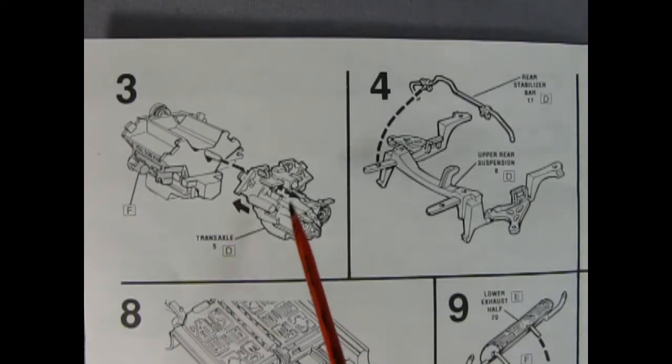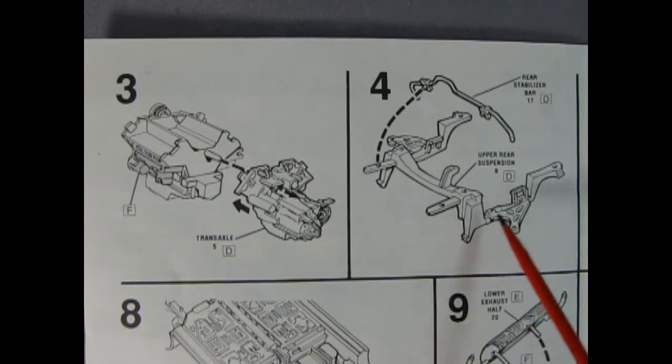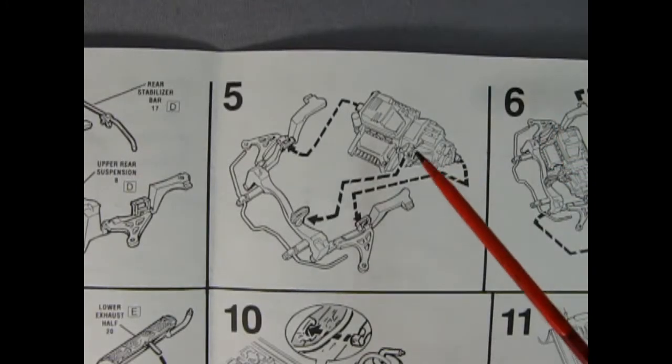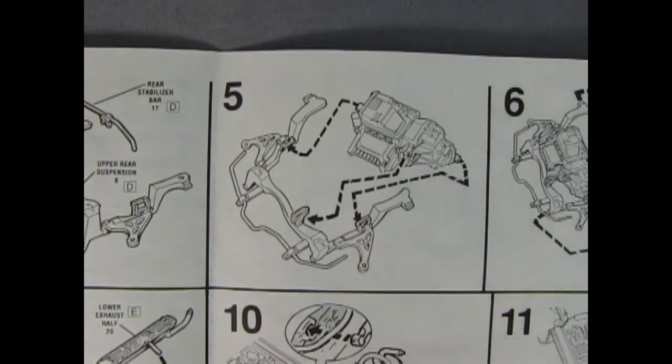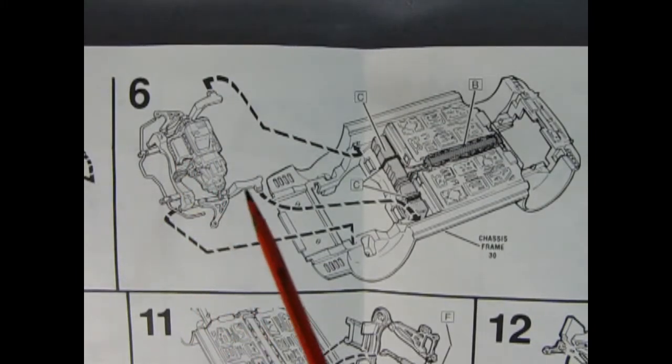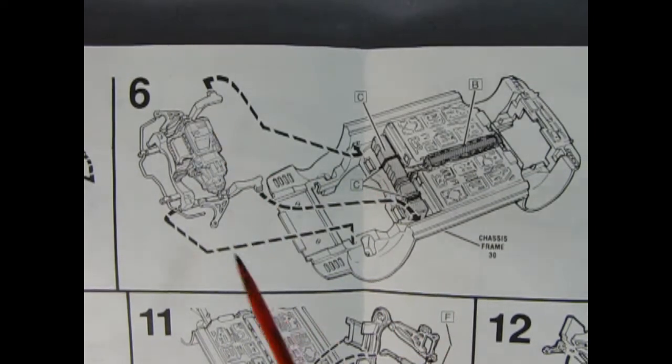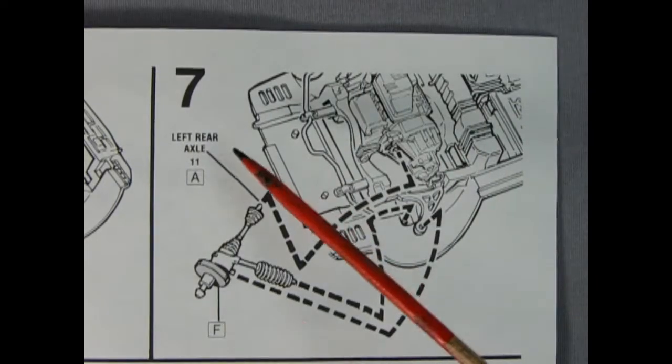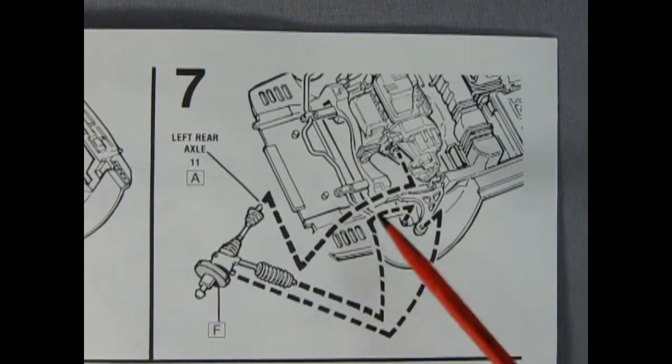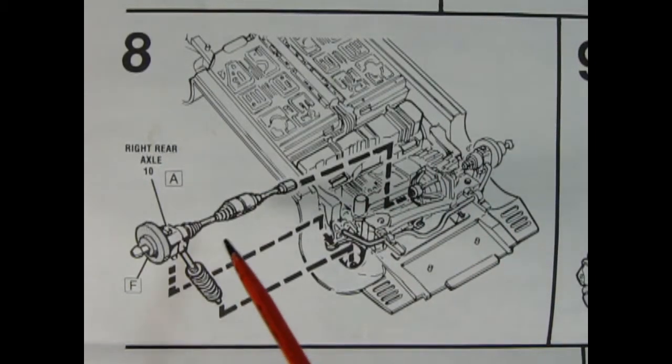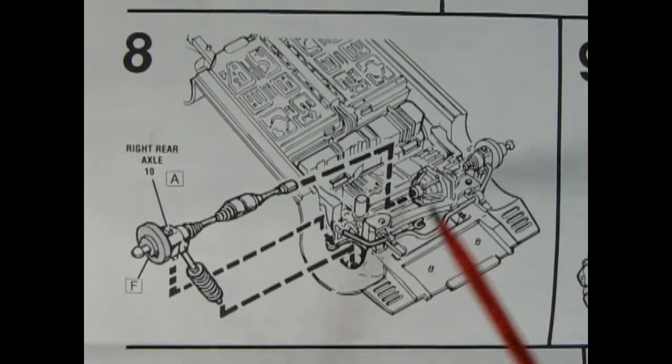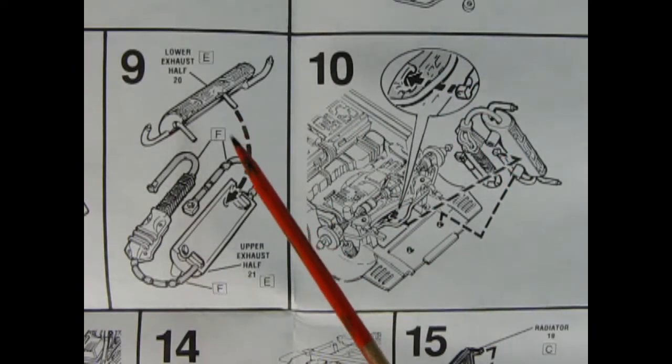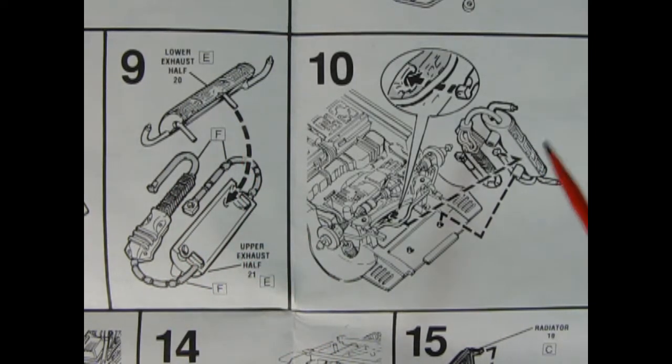Panel 3 shows our transaxle mounting up onto our engine and panel 4 shows our rear stabilizer bar going onto the upper rear suspension component. Panel 5 shows our engine going into the rear stabilizer component. Panel 6 shows the motor and suspension assembly being popped into the chassis by these two clips off the side and a couple little tabs that drop in here. Panel 7 shows our left rear axle being installed into the body on the engine and panel 8 shows our right rear axle with the spring being hooked into the engine. Panel 9 shows the lower exhaust half and the upper exhaust half being put together and then in panel 10 it shows how that clicks in to the back of our engine block.